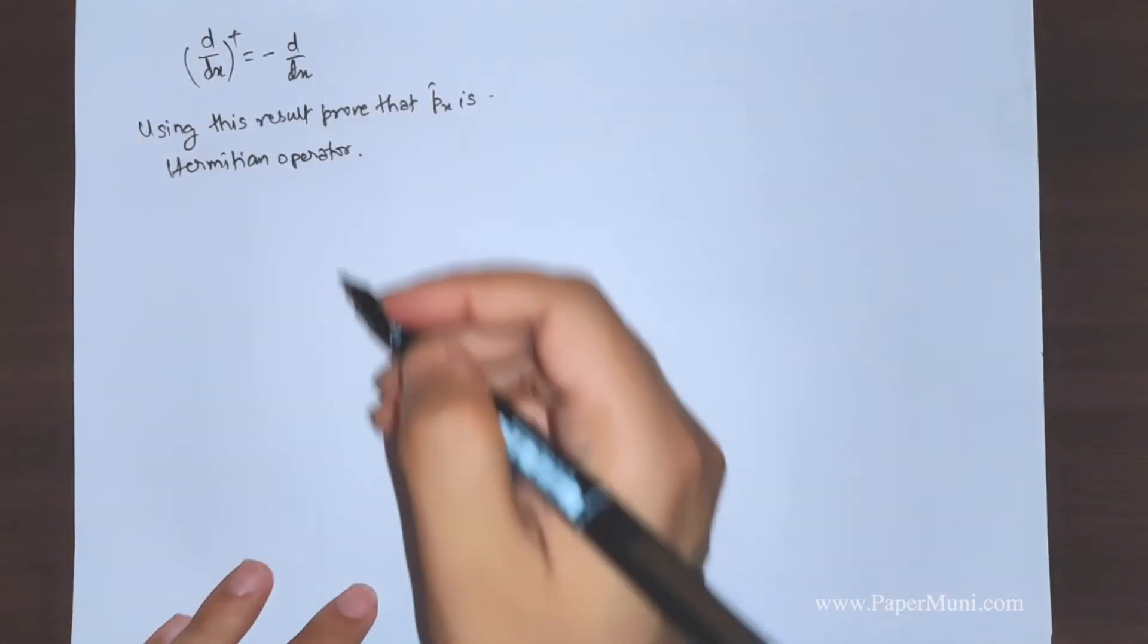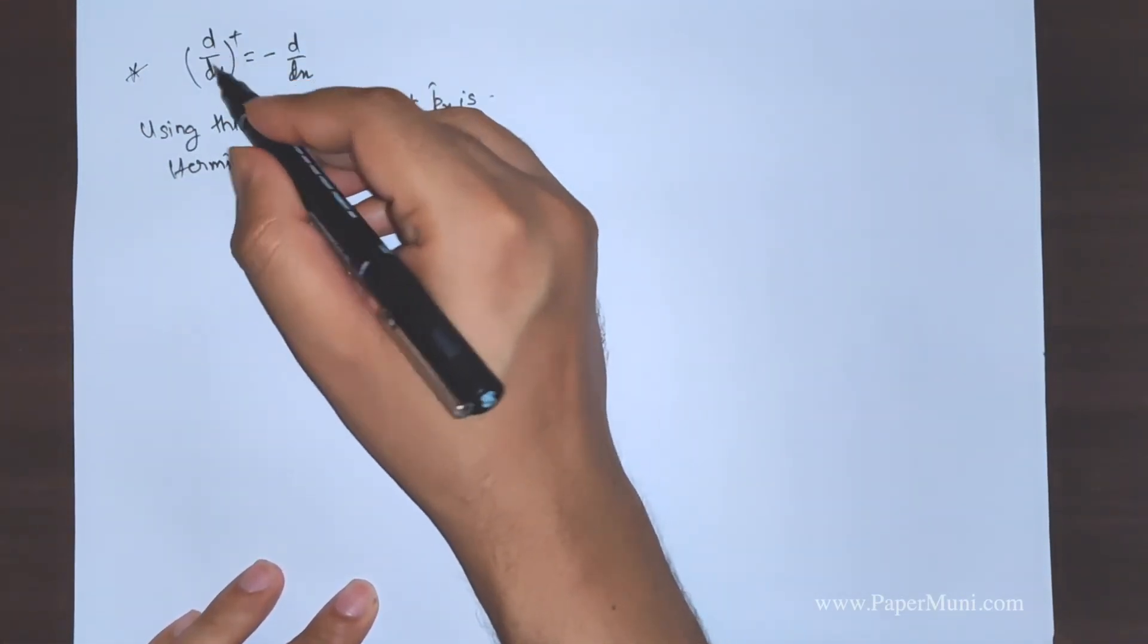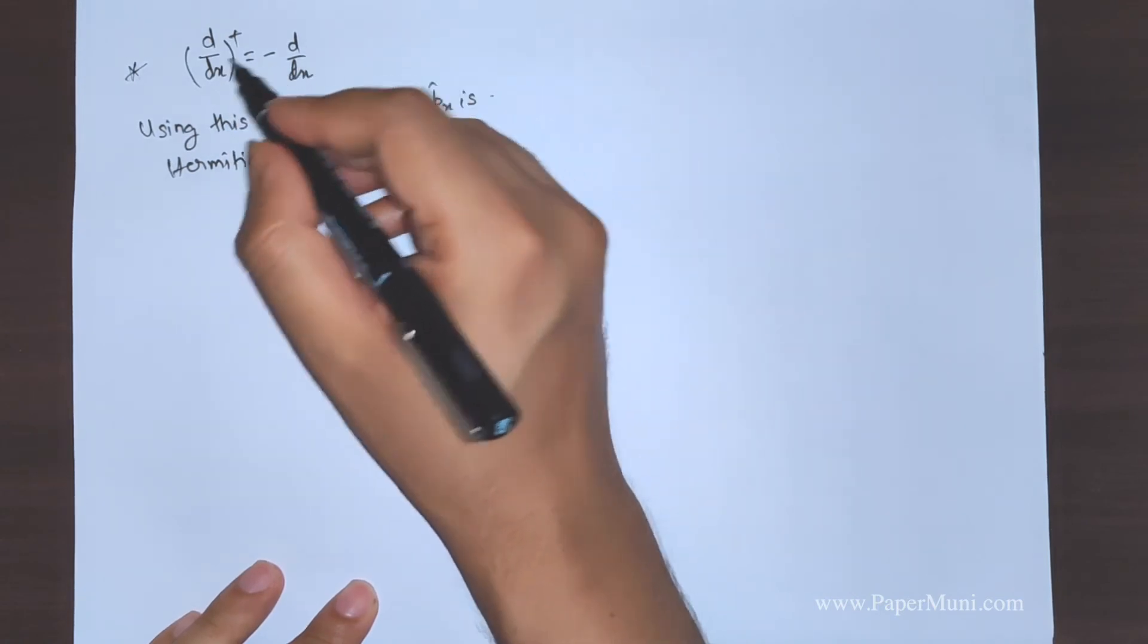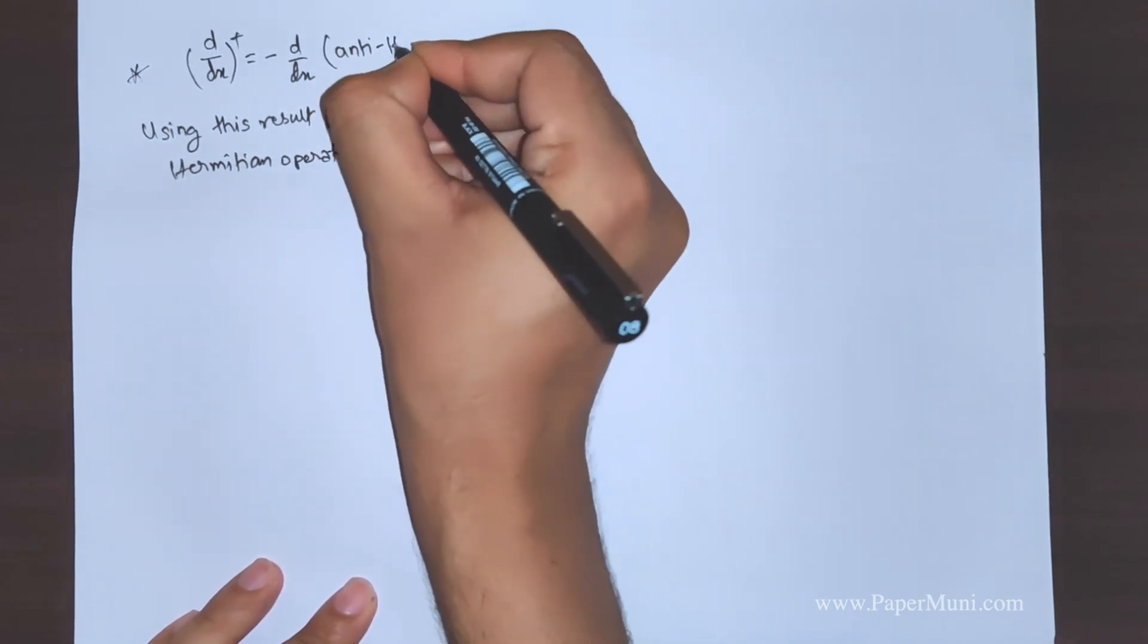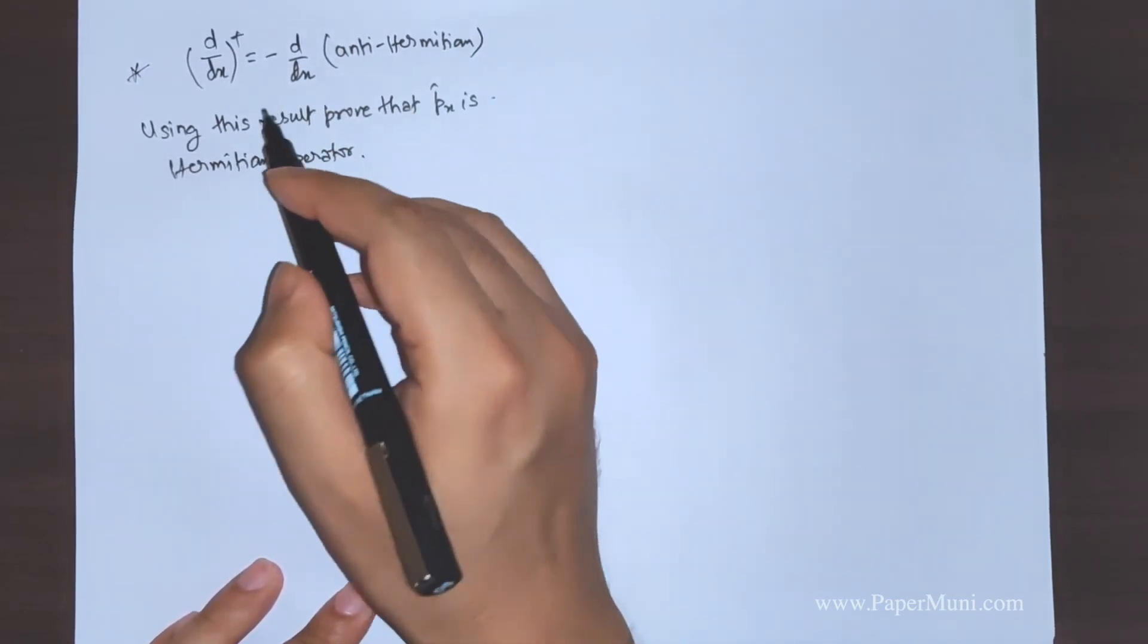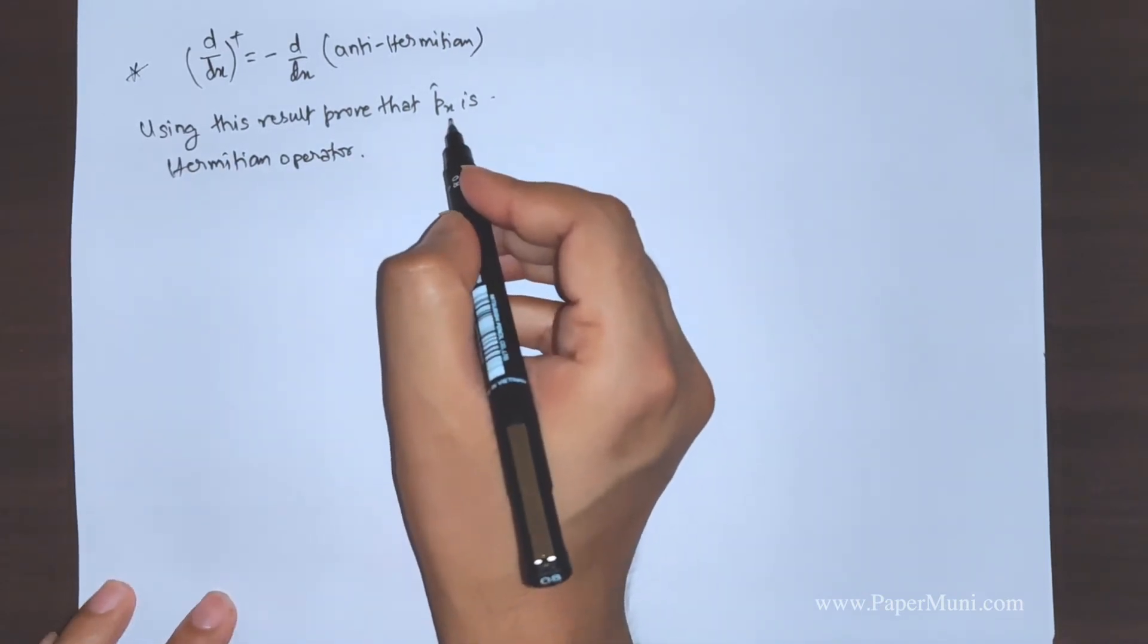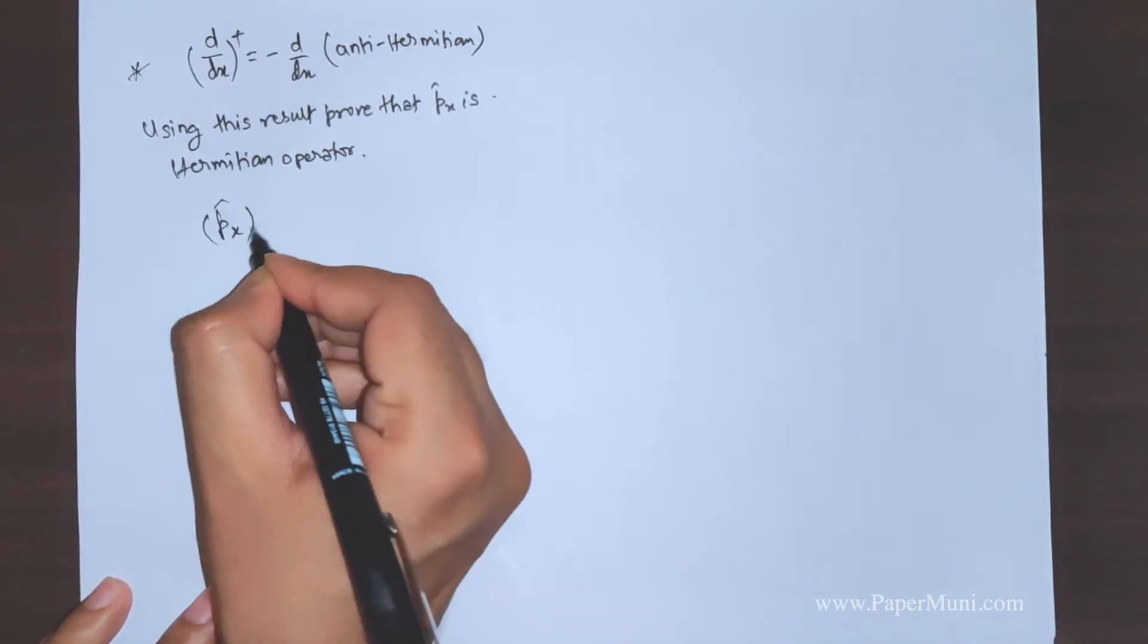Now we will take up a small exercise. We have just proven that the dagger of d/dx is minus d/dx, that means this is antihermitian. Now I want you to use this result and prove that the momentum operator is hermitian operator. You can try it out and then look after the solution.